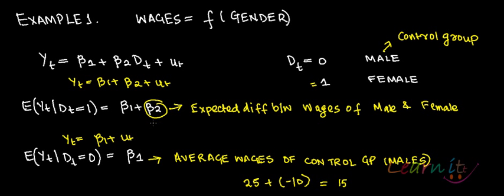In case beta 2 is negative, it means that females are earning on average this much lesser than males. In case beta 2 is positive, then females on average are earning this much more than the males.